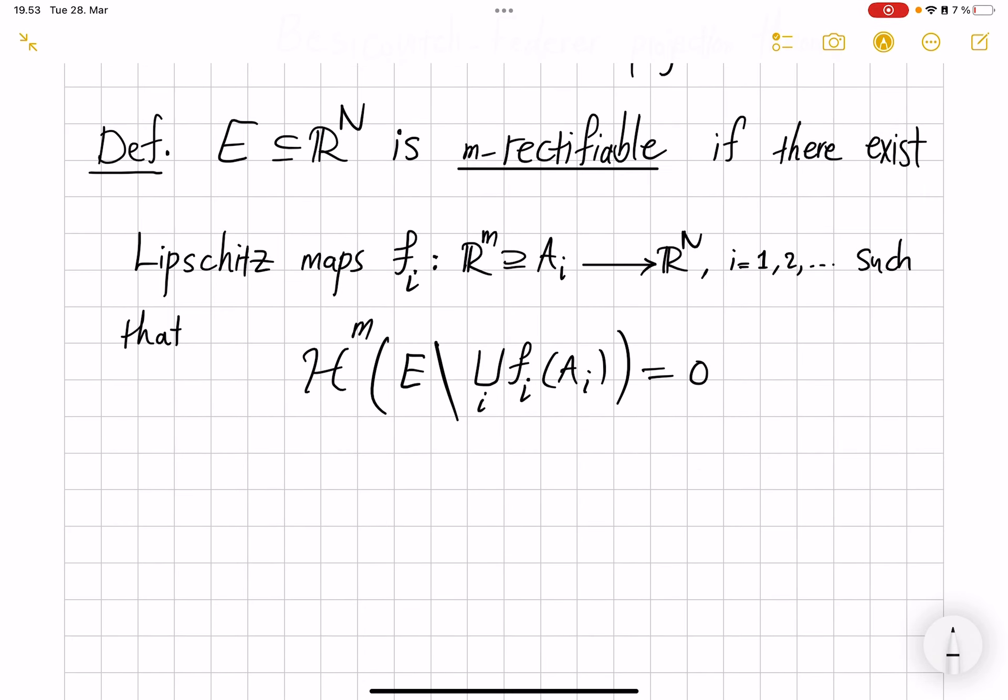Some quick observations that I don't even bother writing down: if you just toss in a countable set into an m-rectifiable set, you still have an m-rectifiable set, because the countable set has measure zero. Similarly, if you remove a countable set, then it is still m-rectifiable.